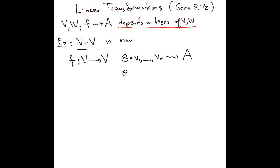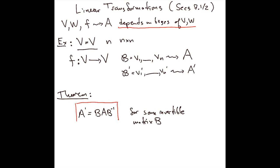But what if I'd chosen a different basis B' which is v_1' through v_n'? That's going to give me some new matrix A', and what's the difference? The theorem is that A' is equal to B·A·B^(-1) for some invertible matrix B.